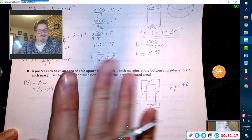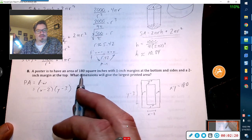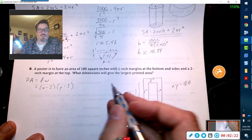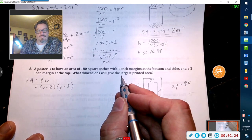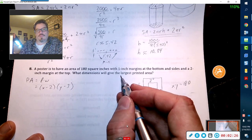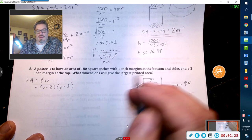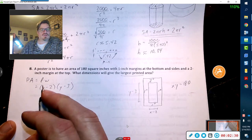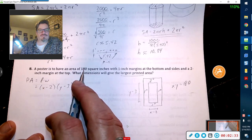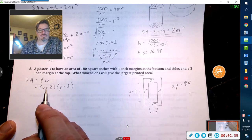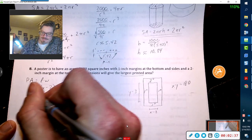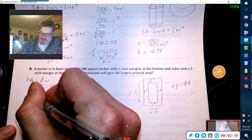But we got two variables, so we're going to use this fact right here. We're maximizing the largest printed area, so let's go ahead and use this information to substitute one of those.